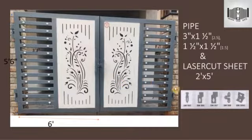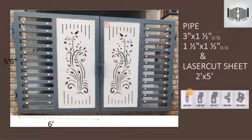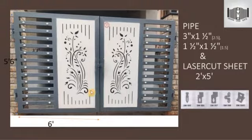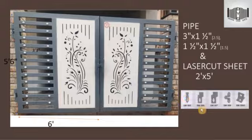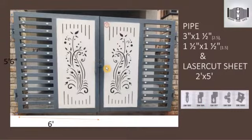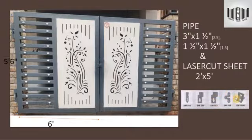Apart from the visible components, products not visible in the gate include a tower bolt and an 'all drop.' Three different designs of all drop are shown; any one can be selected. These are used for closing and locking the gate, as seen in daily life. There are also bushes that support the all drops, and a center locking part.